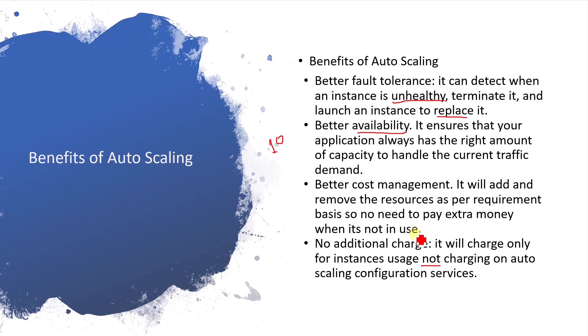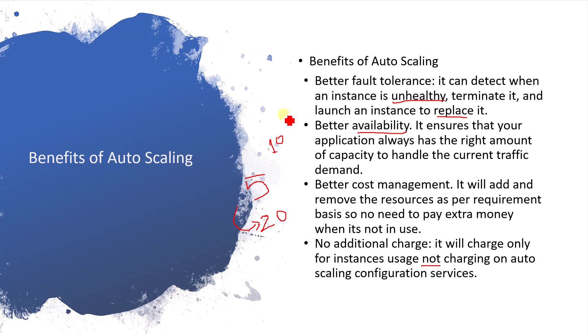For example, if you set a desired capacity of 5 and want to auto scale up to 20 when traffic is very high, auto scaling will automatically spin up 15 more instances and the ELB will redirect traffic. When traffic drops, it will scale down back to 5. You only pay for those 15 extra instances while they are in use. It is a completely managed service so no manual effort is required.